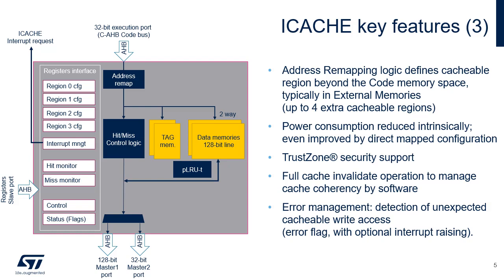Up to four external regions can be defined, and for each of them the refill port can be selected, either master 1 or master 2. Power consumption is reduced when iCache is used, as most instruction accesses are performed from internal cache memory rather than from main memories. Configuring the iCache as a direct mapped cache rather than the default two-way set associative mode also contributes to reducing consumption, because only one set of tag and data memory is accessed instead of two. However, the direct mapped organization may affect performance when the distance between two programs needed at the same time is an integer multiple of the cache size.